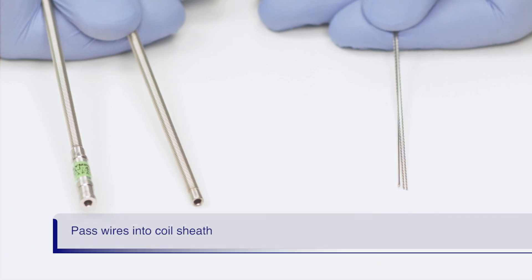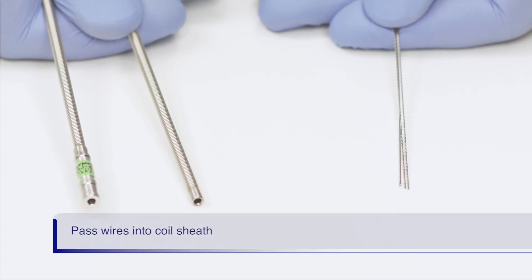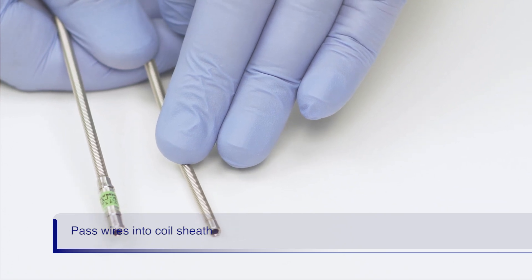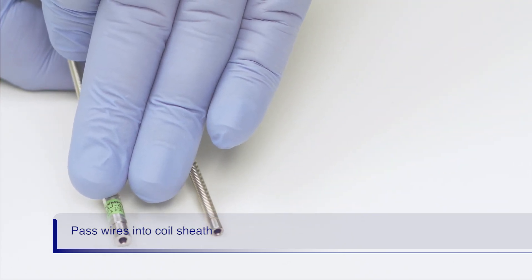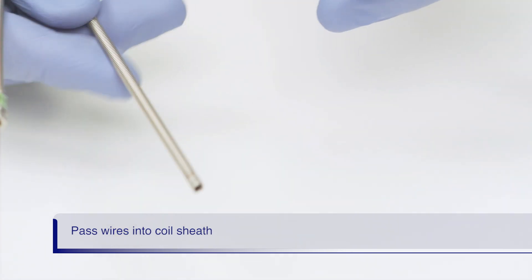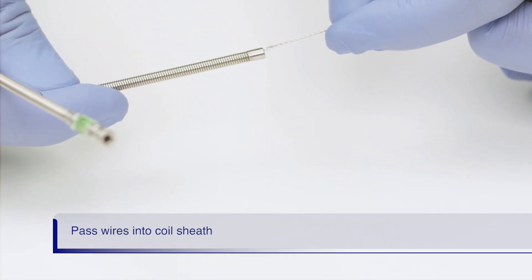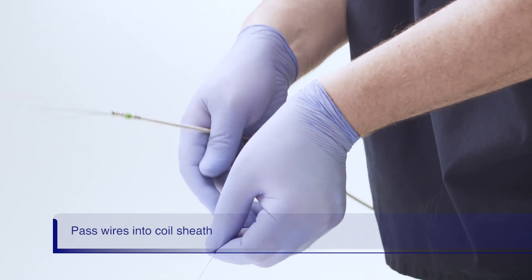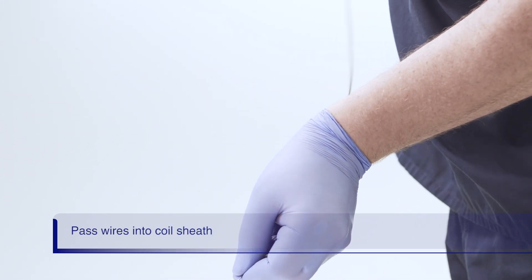The wires are now loaded into the coiled sheath. The wires are advanced through the unmarked distal end of the sheath. The end with the green band is the proximal end and is connected to the handle later on. Ensure you keep the wires straight and together as you advance them through the sheath.